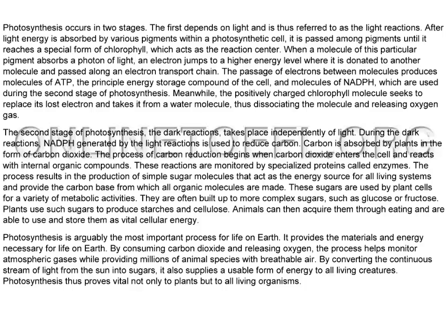Photosynthesis occurs in two stages. The first depends on light, and is thus referred to as the light reactions. After light energy is absorbed by various pigments within a photosynthetic cell, it is passed among pigments until it reaches a special form of chlorophyll, which acts as the reaction center.